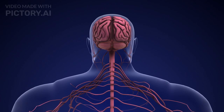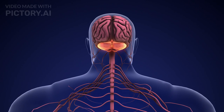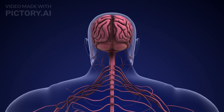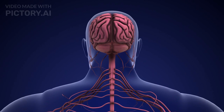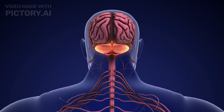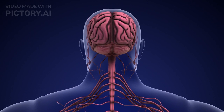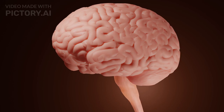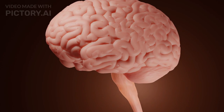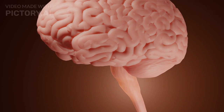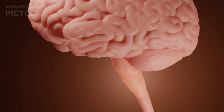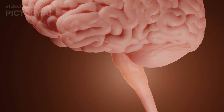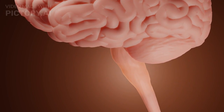The cerebellum, the second largest part, maintains body balance and coordinates voluntary movements. The medulla oblongata controls autonomic functions such as heartbeat and digestion, connecting the brain to the spinal cord.